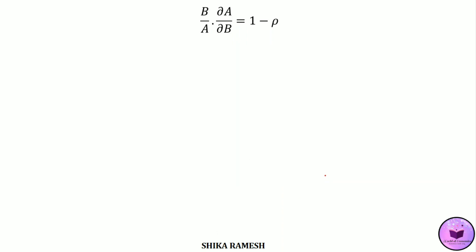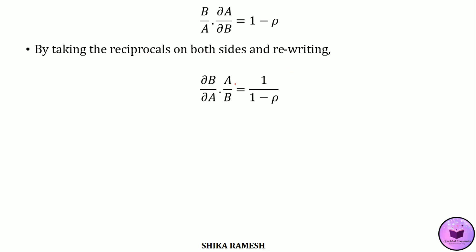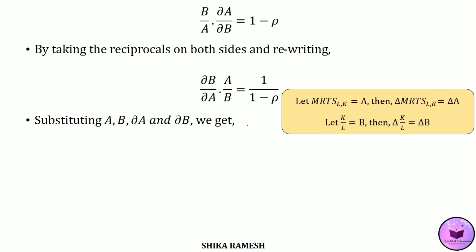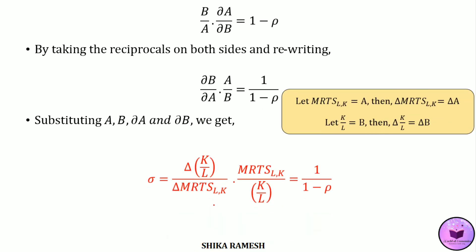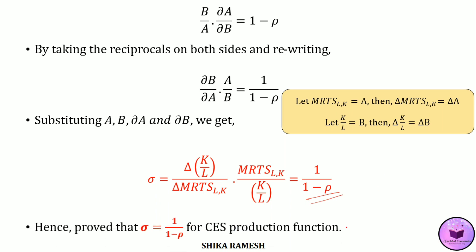Taking reciprocals and rearranging, we get del b by del a times a by b equals 1 by 1 minus rho. Substituting back a, b, delta a, and delta b, we get sigma equals delta(k/l) by delta(MRTS) times MRTS by (k/l), which equals 1 by 1 minus rho. Hence we have proved that the elasticity of substitution for a CES production function is 1 by 1 minus rho, where rho is the substitution parameter. If you like the video, do subscribe to my channel and share. Thank you.